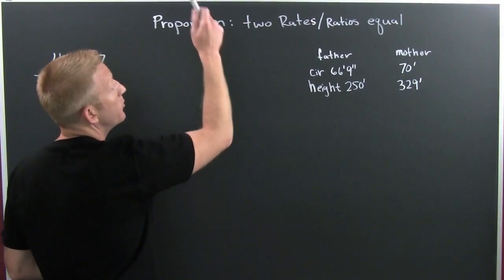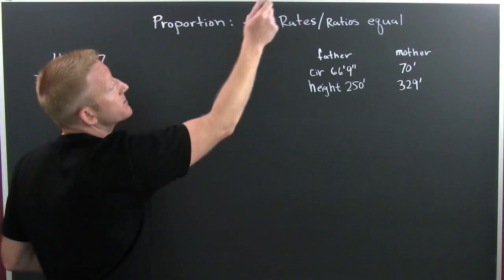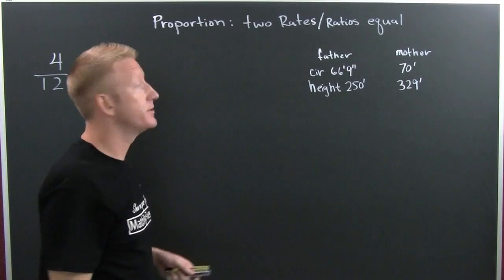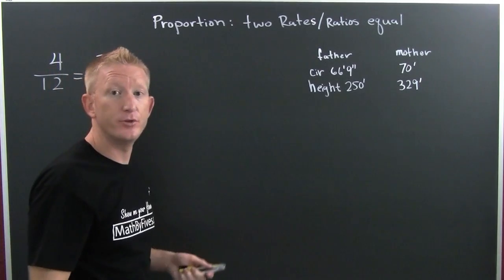A proportion is when two rates or ratios are equal. Now, the ratio is the quotient of two numbers, whereas the rate is the quotient of two quantities.